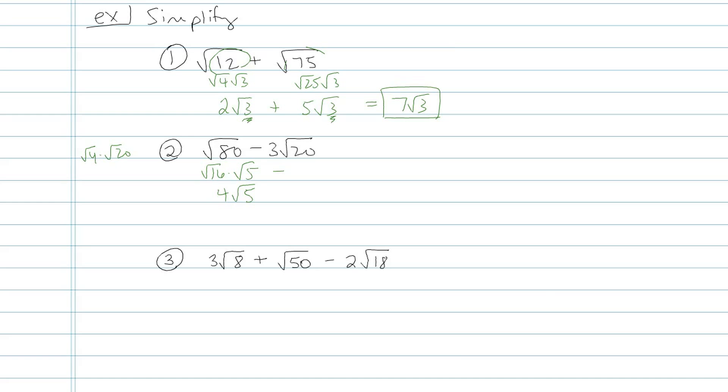The second one's a little trickier because it has that 3 out front. I'm going to ignore the 3 for now. I'm going to look at the square root of 20 and turn that into the product of two numbers such that one of the numbers is a perfect square, like square root of 4 times square root of 5, because square root of 4 is just 2. So now my second term is going to be 3 times 2 root 5, otherwise known as 6 root 5.